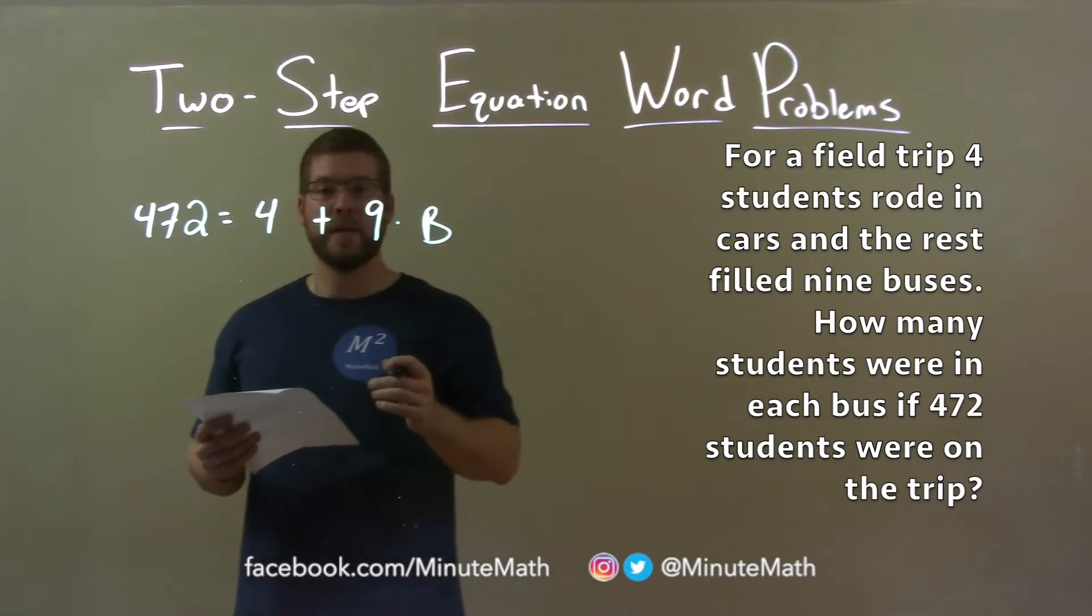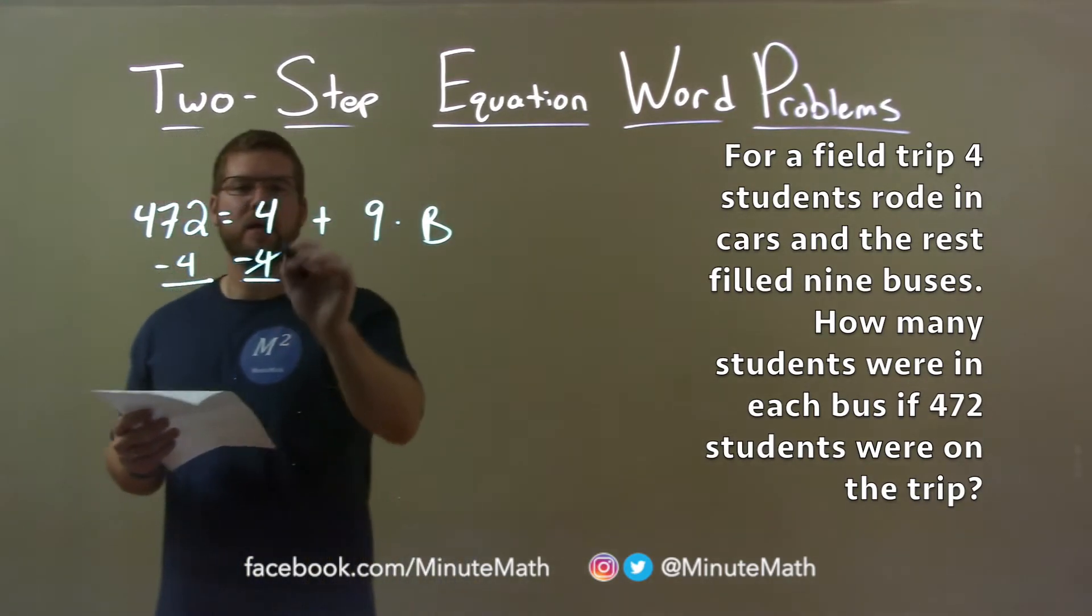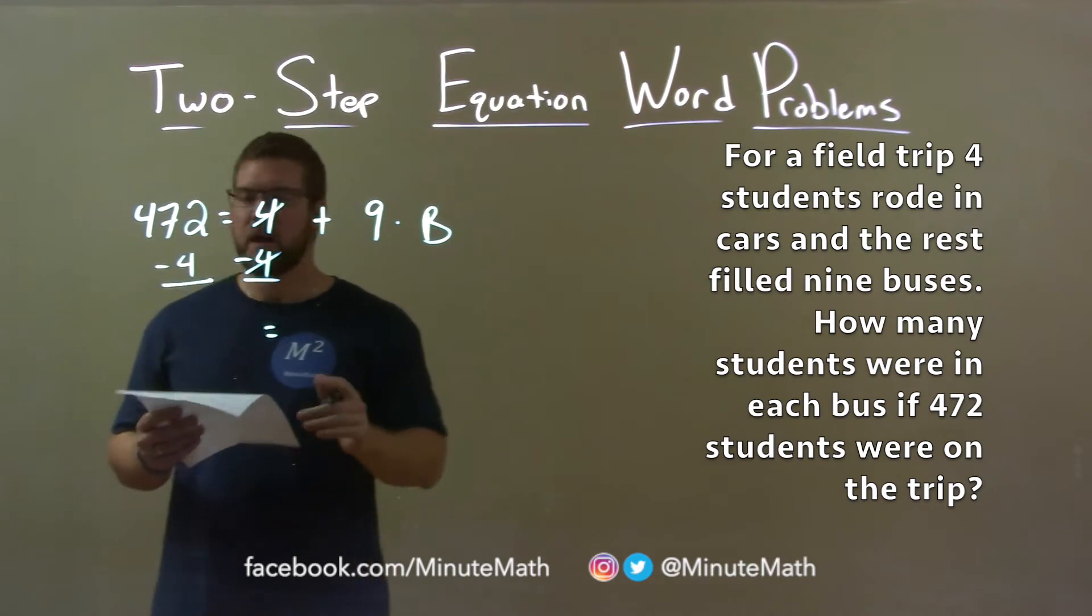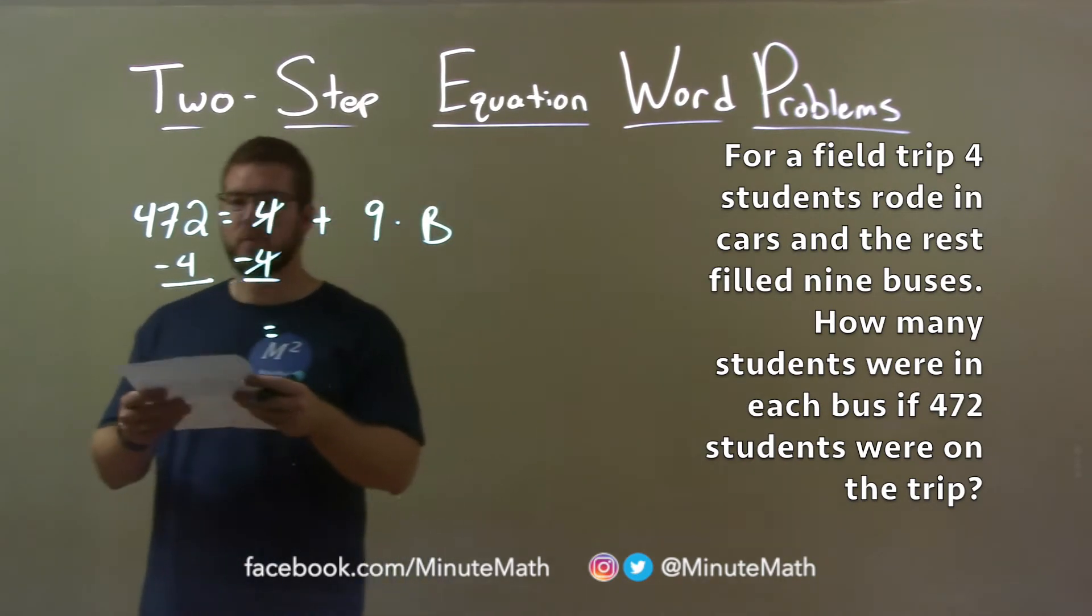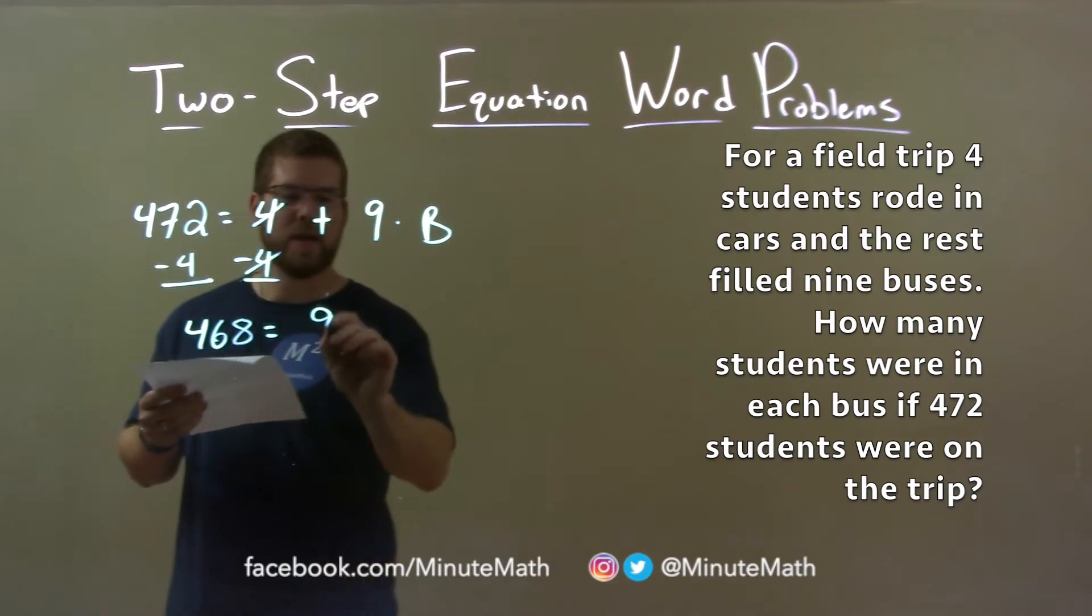Well, let's solve for B now. We subtract four from both sides, and that cancels out the four on the right. On the left, 472 minus four is 468. We bring down the nine times B.